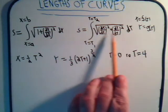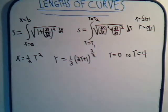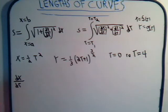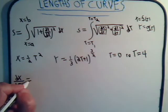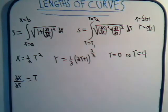So clearly this is the integral formula that we're interested in. The first thing we have to do is find out what dx/dt and dy/dt are. So dx/dt: bring the 2 down times ½ is 1, so that's just t.